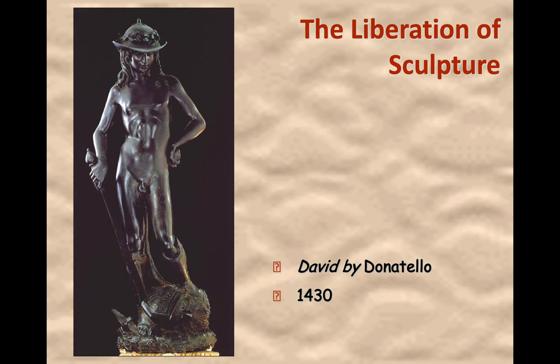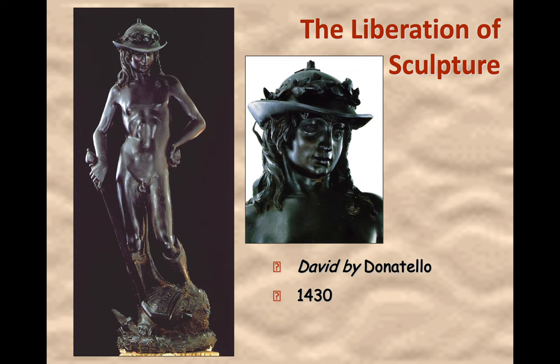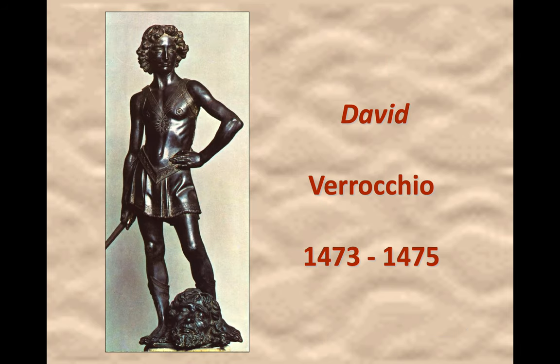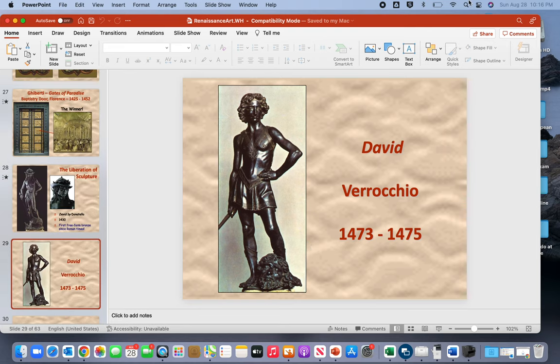Sculpture is a form of art that came back strongly in the Renaissance. We see nudes done, with the subject here being David from the biblical story of David vs. Goliath. We see David done in bronze by Donatello, then also by Verrocchio, and you're probably most familiar with Michelangelo's sculpture of David. That's all I want to cover for the first part of Unit 1.1.